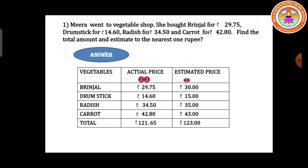See the brinjal actual price: 29 rupees 70 paise. The paise value is greater than 50 paise, so we add plus 1 rupee to the previous digit — that is 29 rupees plus 1, giving 30 rupees. Next, drumstick actual price is 14 rupees 60 paise. 60 is greater than 50, so add plus 1: 14 plus 1 is 15 rupees. Radish: 34 rupees 50 paise — 50 paise is equal to 50, so add plus 1: 34 plus 1 is 35 rupees.